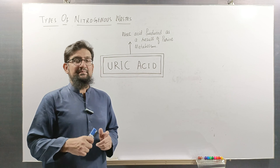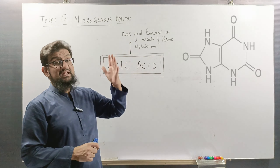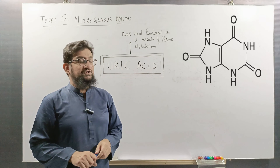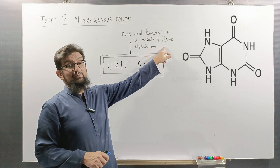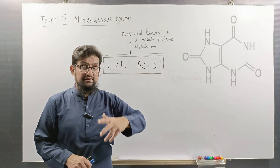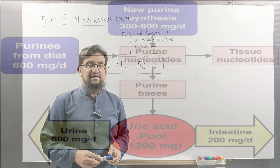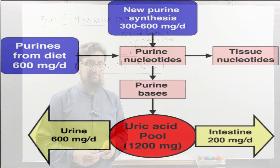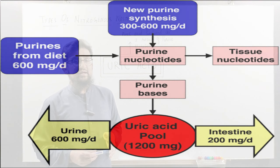First of all, you must remember that uric acid is a weak acid which is produced as a result of the metabolism of purines. Purines are part of our DNA and our RNA.